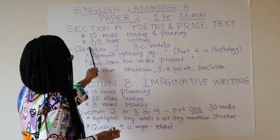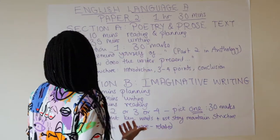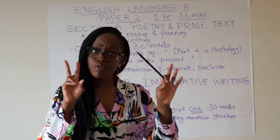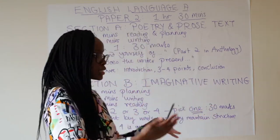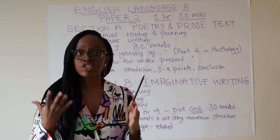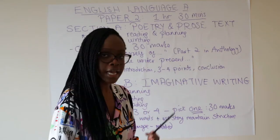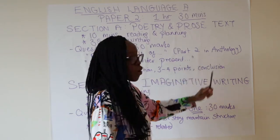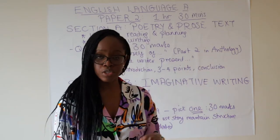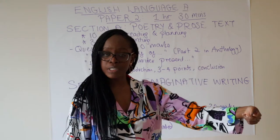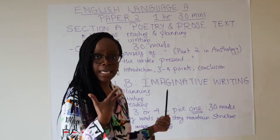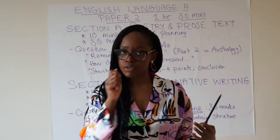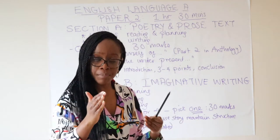Of your 45 minutes for Section A, spend 10 minutes reading and planning, and the remaining 35 minutes writing your response. Question one, worth 30 marks, tends to ask something along the lines of 'remind yourself of...' followed by keywords. The extract is taken from Part 2 of the Edexcel anthology — a text you've already prepared for in class. It then asks how the writer presents whatever those keywords are.